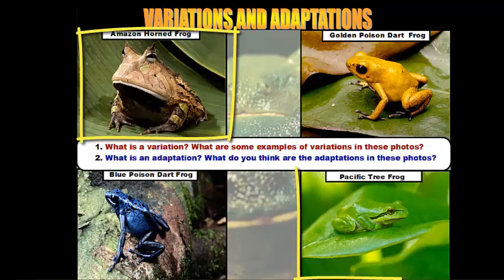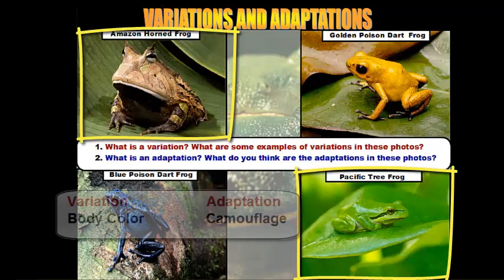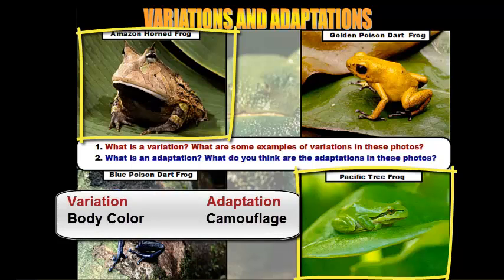The same goes for the Pacific tree frog, except it lives up in the trees. The Pacific tree frog is bright green, like the leaves it sits on or is surrounded by. So for the horned frog and the tree frog, the color of their bodies acts as camouflage, and this is important because it allows them to do two things to help them survive.